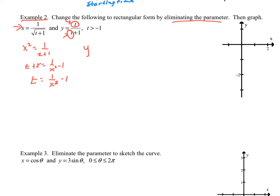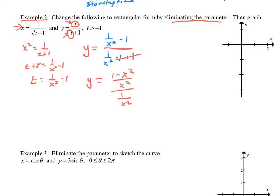Now I take this and put it in wherever I see my t. So y is equal to my new chunk, which is 1 over x squared minus 1, and then I have that down here too. It's not pretty, but it is what it is, and then I get a plus 1. So if I simplify this, these go away, and y is equal to — common denominator on the top — 1 minus x squared, all over x squared. And I'm going to get 1 minus x squared.